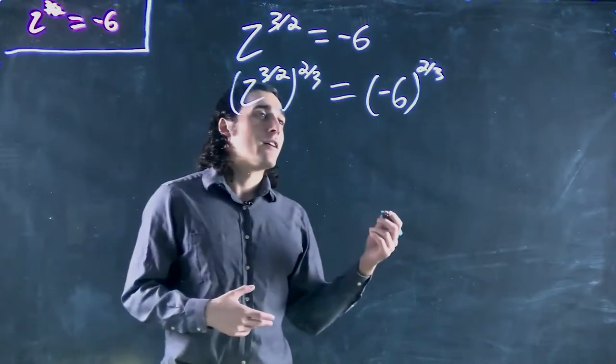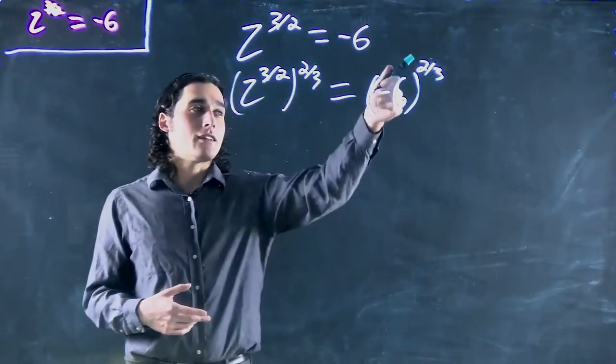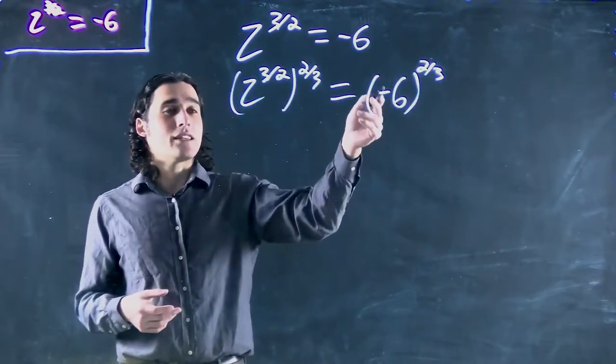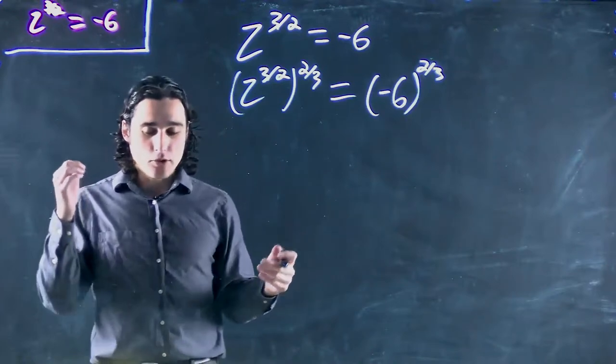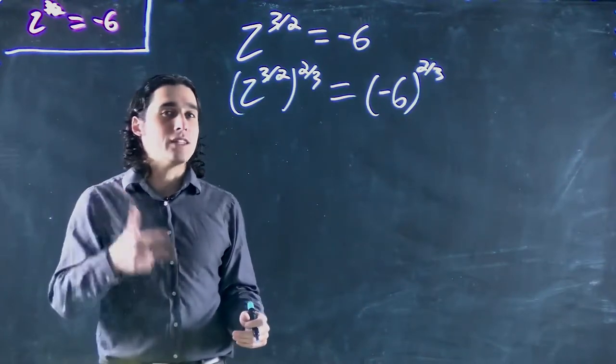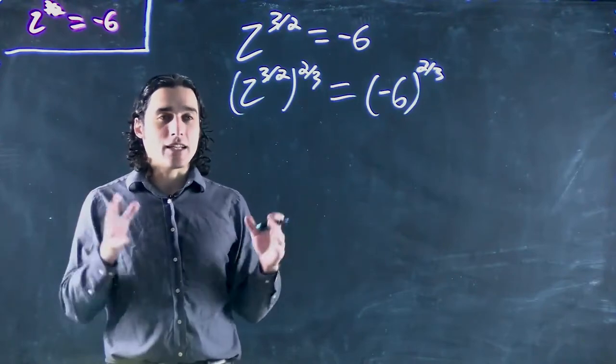Well, we can't take a negative to this type of power. The only time we can evaluate the negative is when we're talking about a pure odd root. So 1 third, 1 fifth, 1 seventh, 1 ninth, something like that.